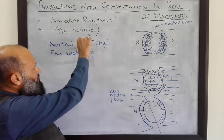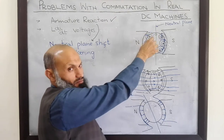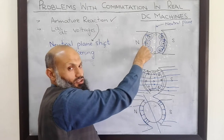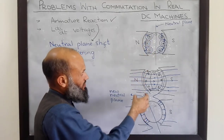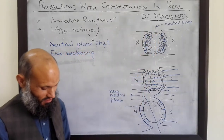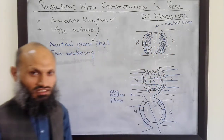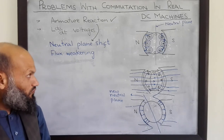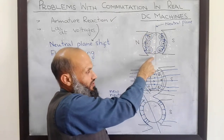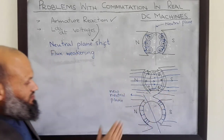This phenomenon is called neutral plane shift. To summarize: due to current in the coils, there is a magnetic field, and the interaction of the main magnetic field and the magnetic field due to current in the coils causes the neutral plane to shift by some angle. The shift in the neutral plane is opposite for generators and for motors, because the direction of flow of current is opposite in the conductors.